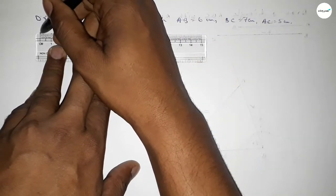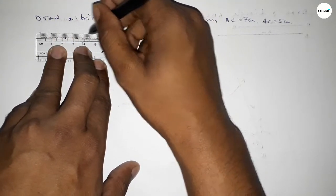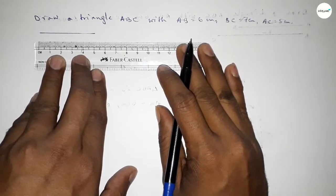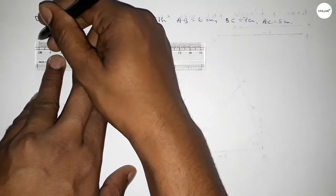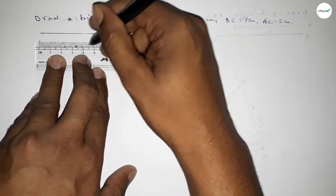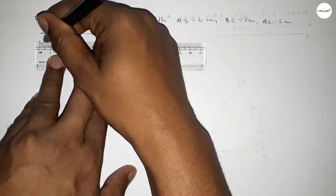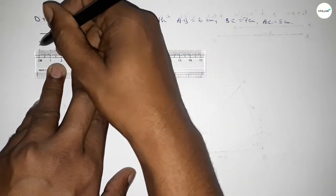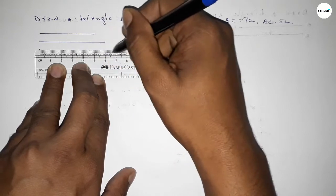First of all, drawing here a line of length 5 centimeter. So this is 5 centimeter. Then drawing a line of length 6 centimeter. So this is 6.